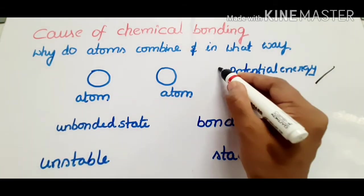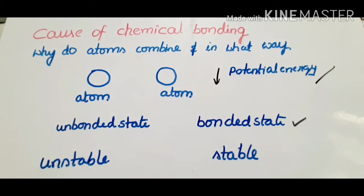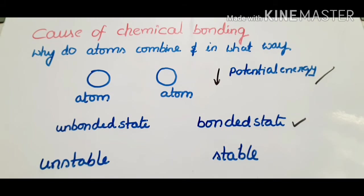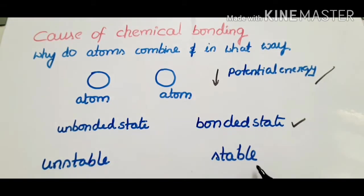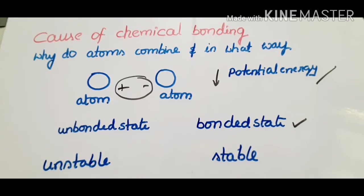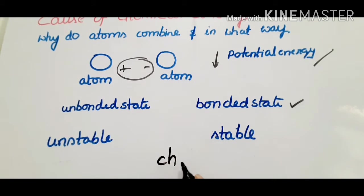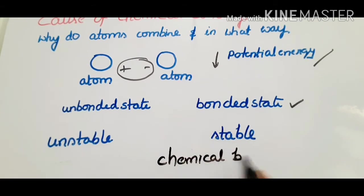If you have less potential energy, this is the stored potential energy in the unbonded state. When the two atoms approach each other, electrons and nuclei attract one another. As a result, potential energy will decrease and a chemical bond results. This is chemical bonding.